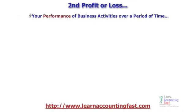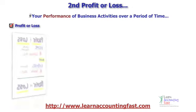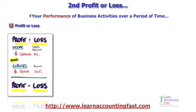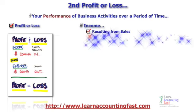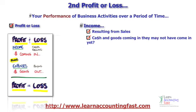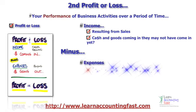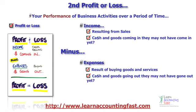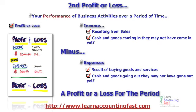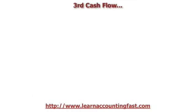Next, we have a profit and loss — your performance of activity over a period of time. The profit and loss is made up of income resulting from sales, cash and goods coming in, but they may not have come in yet. Minus your expenses resulting from buying of goods and services — and again, cash may or may not have come in. And this will give you a profit or a loss for the period.